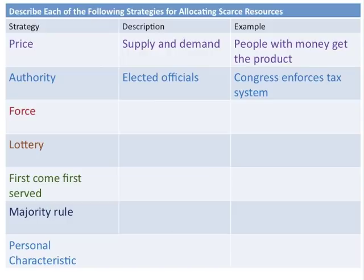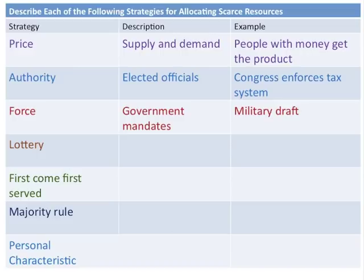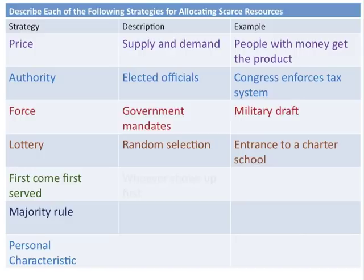A historically relevant method is force — the government mandates what to do when there's a scarcity of resources, such as a military draft in the 1960s and 70s. A fourth strategy is random selection, like a lottery. First-come, first-served is another approach — if you go to Best Buy on Black Friday for a sale TV, whoever shows up first gets the item.